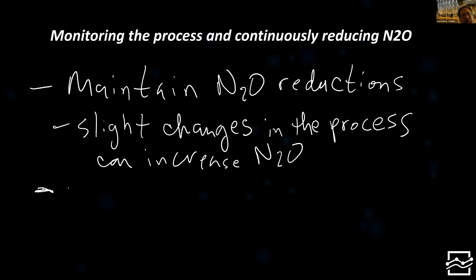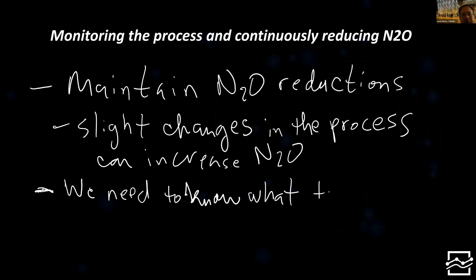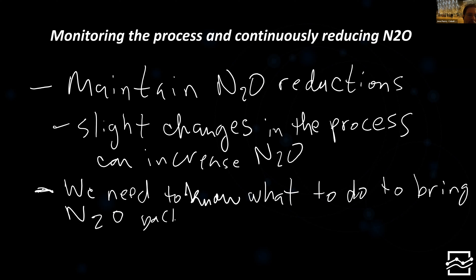We also need to monitor the process and continuously look at the risk, because it's not just a matter of seeing that N2O has increased again after reducing. We need to know what to do to bring N2O back down. So if we're continuously monitoring the risk using the knowledge-based AI, then we'll know what we need to do to bring the N2O back down.